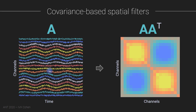A covariance matrix is the result of multiplying a data matrix by its transpose, and it encodes all of the linear pairwise relationships across all combinations of channels. Looking at this dataset, you can already see spatial structure: these channels up here are all positively correlated — they all go up and down together. These channels here are also positively correlated with each other.